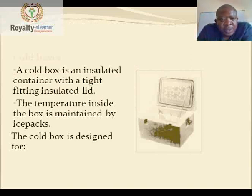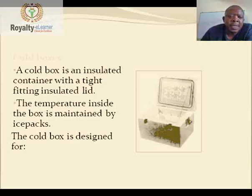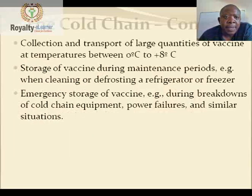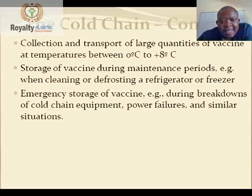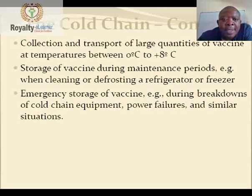Cold boxes are containers with a tight-fitting insulated lid. The temperature inside is maintained by ice packs. Cold boxes are designed for collection and transport of large quantities of vaccines at 0 to positive 8 degrees Celsius, and for storage during maintenance periods such as cleaning or defrosting a fridge or freezer, and for emergency storage during equipment breakdowns — always keeping vaccines between 0 to positive 8 degrees Celsius.